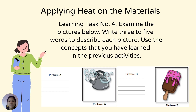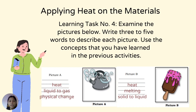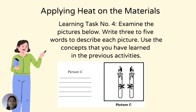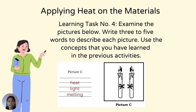Learning Task 4: Examine the pictures below and write 3 to 5 words to describe each picture using the concepts learned in previous activities. Answers: Picture A — heat, liquid to gas, physical change. Picture B — heat, melting, solid to liquid. Picture C — heat, light, and melting.